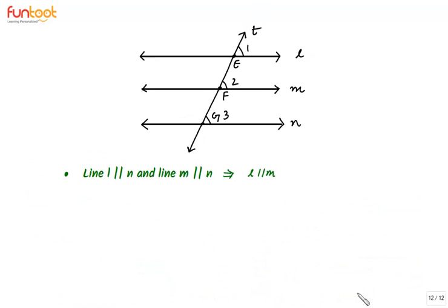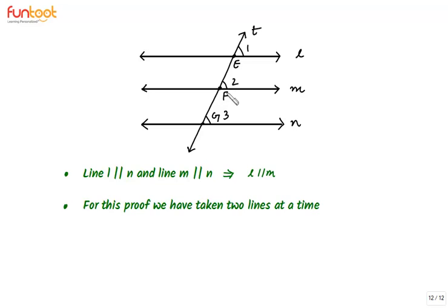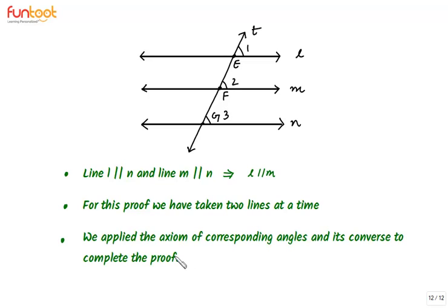Let's summarize what we have learnt in this proof. If line L is parallel to line N and line M is parallel to line N, then line L is parallel to line M. For this proof we took two lines at a time, and we used the corresponding angle axiom as well as its converse.